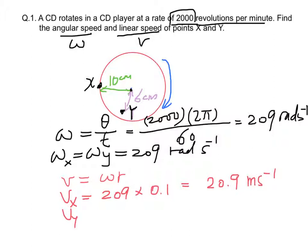Similarly, vy equals 209 times the radius at y equal to 0.06 meter. Therefore, the result is equal to 12.5 meters per second.